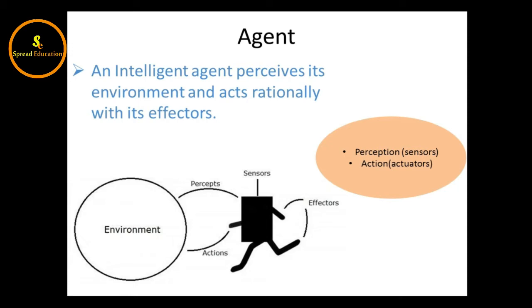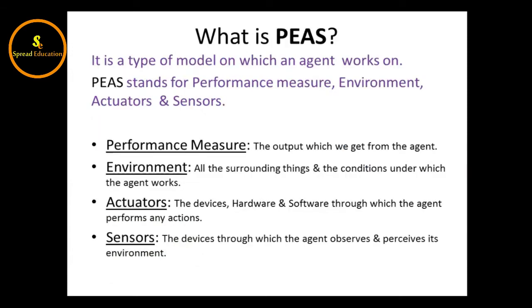Now you should have an idea of what an agent is. Let's move on to PEAS. PEAS is a type of model on which an agent works. PEAS stands for Performance measure, Environment, Actuators, and Sensors.